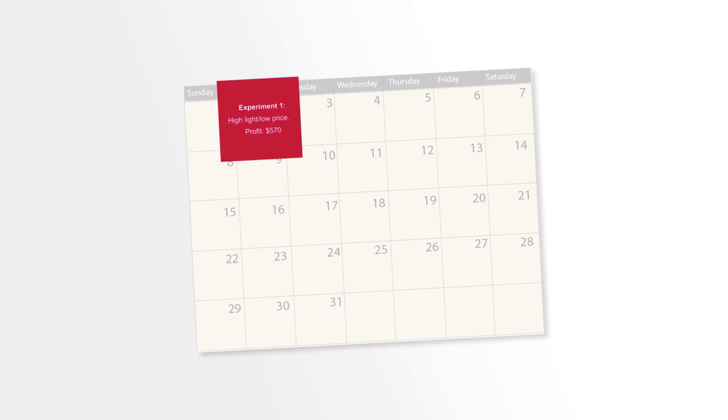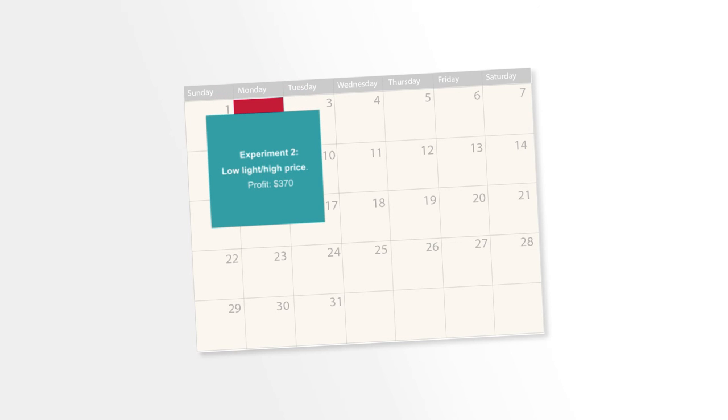On the first Monday, you run the experiment with high amount of light and low price. And let's say you get a profit of $570. Then the next Monday, you run the combination of low amount of light and high price and the profit is $370.